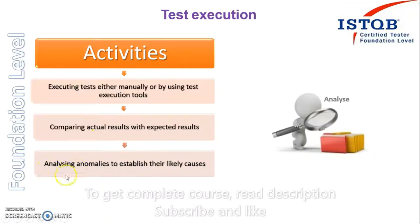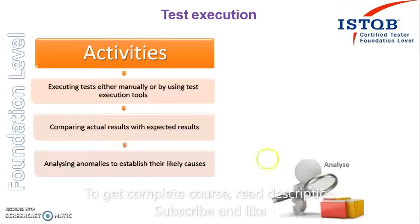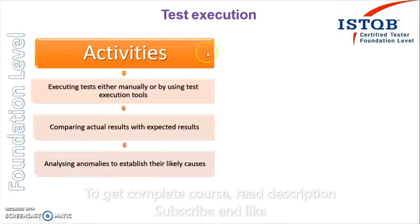Moving to the third point: analyzing anomalies to establish their likely cause. This is a very important activity in test execution. After executing your test case and getting a result, you have to analyze whether the failure was due to a problem in the test environment or an actual failure in the software. If it's a test environment issue, correct the environment and re-run. If it's a software problem, inform the relevant people.